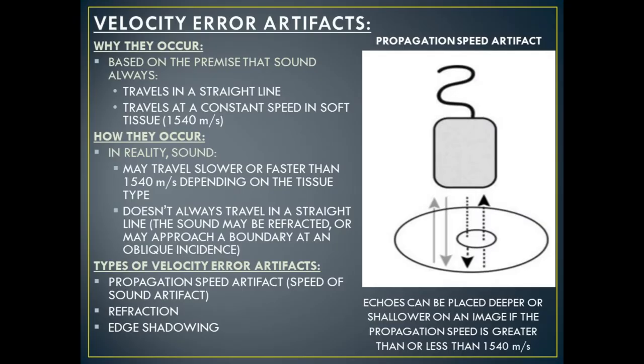In ultrasound, velocity error artifacts are based on the premise that sound always travels in a straight line and always travels at a constant speed in soft tissue, which is 1540 meters per second. In reality, sound may travel slower or faster than 1540 meters per second depending on the tissue type, and sound doesn't always travel in a straight line — it may be refracted or may approach a boundary at an oblique incidence.